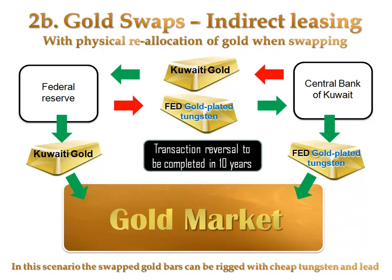According to various sources, the US has found a way of doing so. They empty the bellies of the gold bars that are being swapped, keep the gold that is removed from the inside, and fill the bellies up with a cheap alloy of tungsten and lead. They use tungsten because this material roughly has the same density as gold. So when the bars in Kuwait are weighed for their correct weight and density, nothing suspicious is noticed.